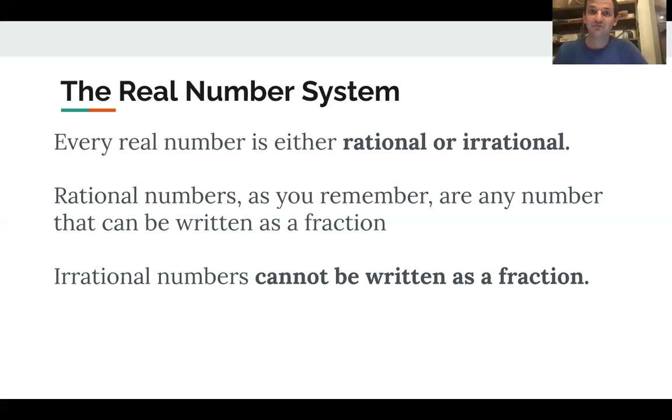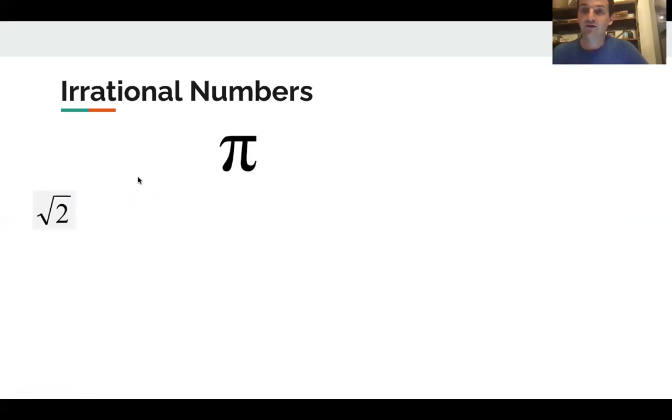So the first one is pi. Pi famously is 3.14, but we're not done, right? 1, 5, 9, 2, 6, et cetera, et cetera, et cetera. When you learn about pi, you learn that it's the ratio of a circle circumference and its diameter. But it's also this number whose decimal goes on forever and ever and never repeats.